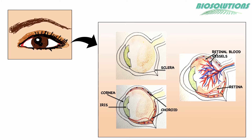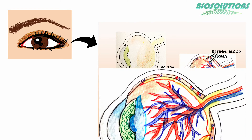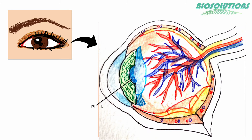The retina is the innermost layer, about 22 mm in diameter, and occupies 72% of the eye sphere. It is filled with a clear jelly-like vitreous humor.